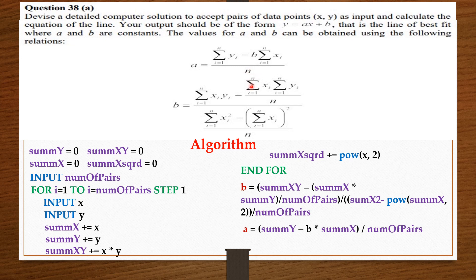From the question, your output should be of the form y equals ax plus b. So we print: y equals the value of a, x plus the value of b. Alright guys, we are through with the algorithm. Let's take a look at our code in C++.